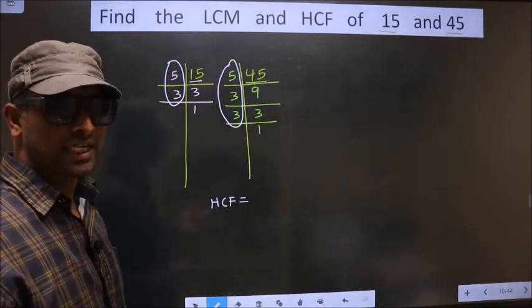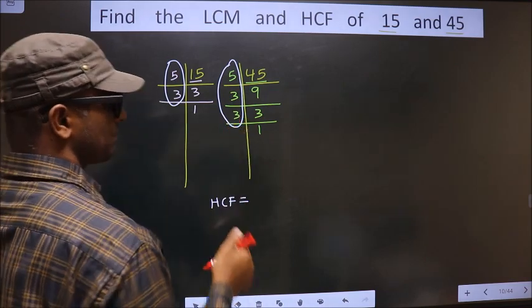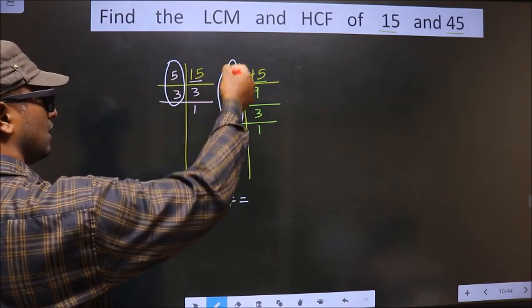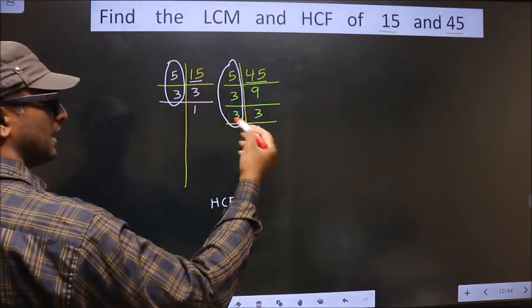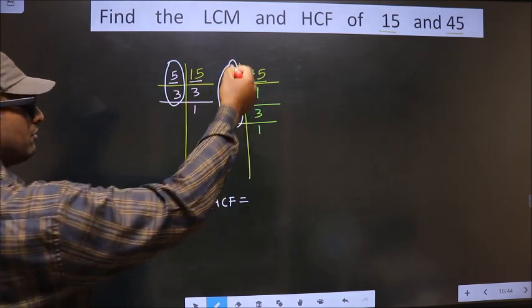So now we should find the numbers that are present in these two places. I repeat, we should find the numbers that are present here and also here. So let us find, starting with the number 5. Do we have 5 here?